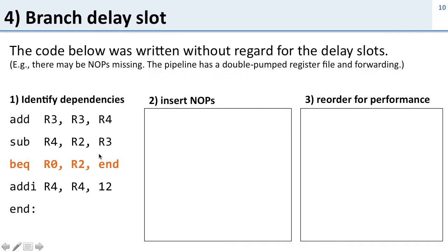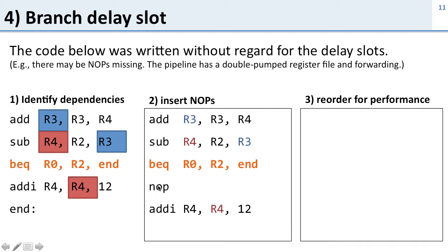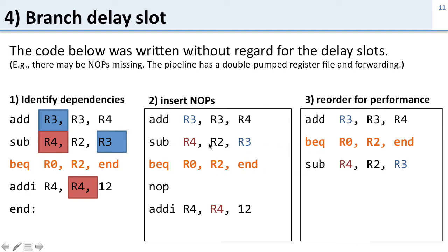Now a question about branch delay slots. In this code we're ignoring the branch delay slot — let's fix that. The add generates results used by the subtraction, and the subtraction generates results used by add-immediate. Without reordering, we just insert a no-op after the branch since the branch always executes the instruction after it. For better performance, we can move the subtraction into the delay slot since it will always execute regardless of the branch. Then add-immediate is only executed if the branch is not taken.